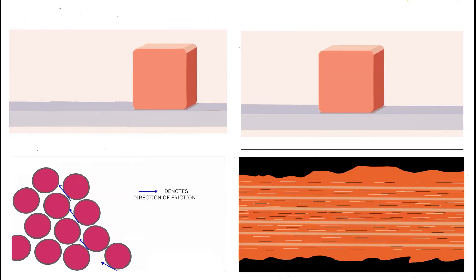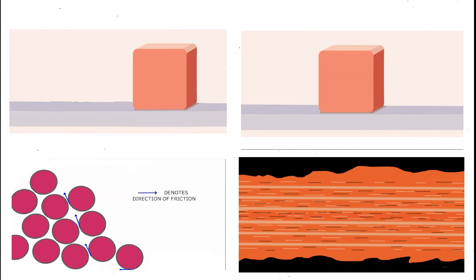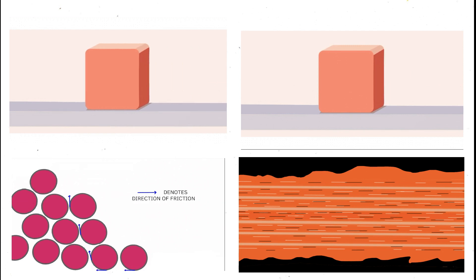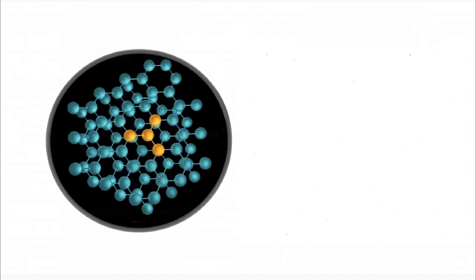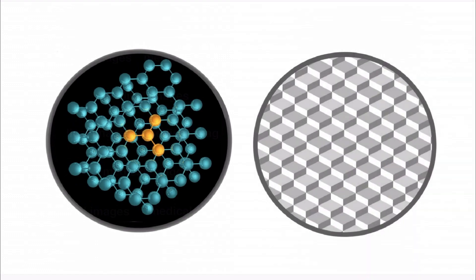But why do all surfaces have friction? There can be many reasons, but on the molecular level, it is due to the structure of the molecule if covalently bonded — for example, long chain hydrocarbons. And in the case of crystalline ionic solids, it is due to the cube lattice arrangement.